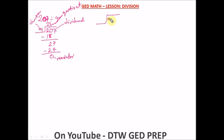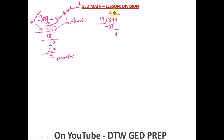Let's do one more. We have 399 divided by 19. Can 19 go into 3? No. Can 19 go into 39? Yes, just two times. 2 times 19 is 38. Put 38 under 39 and subtract, then drop down the 9. 9 minus 8 gives 1, and 3 minus 3 is 0, so we have 19. 19 into 19 goes 1 time, and 1 times 19 is 19. Subtract — 19 minus 19 is 0, remainder is 0.